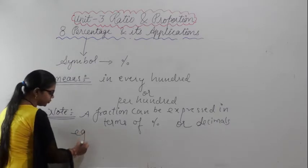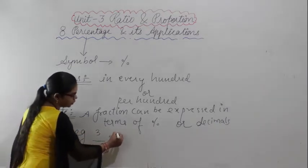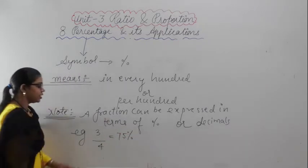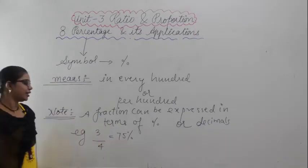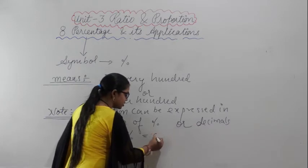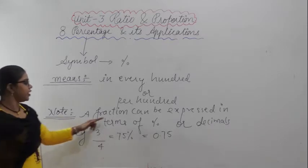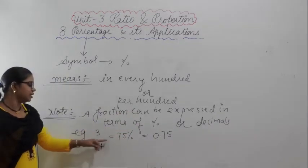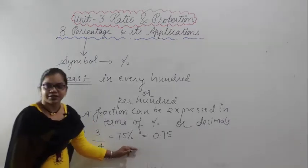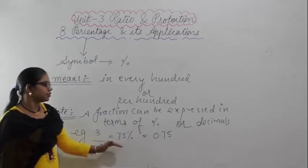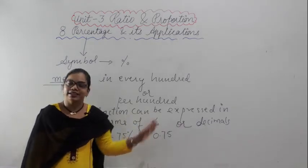For example, 3 by 4 will be equal to 75%. If I take out the percent for this, it will be equal to 75%, or I can write this as 0.75 in decimal. A fraction can be expressed in the terms of percentage or decimal.